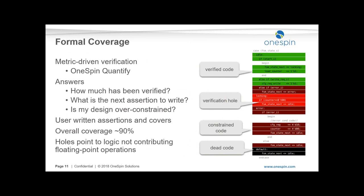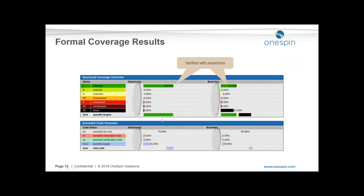The discrepancies in setup effort were due to tool and floating point app familiarization and constraint setup at the interface level. To assess how much of the design is covered, we used quantify coverage metrics to see how much code coverage is covered by the checks provided with the verification IP. We ended up with 50% of branches and 99% of statements covered by the verification IP.